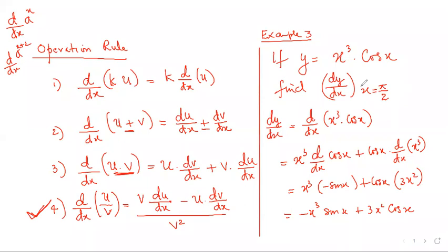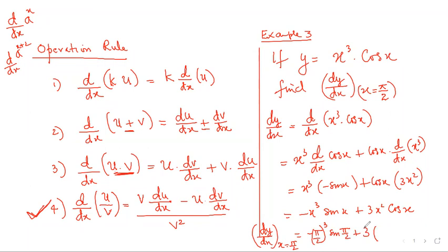After the derivative is done, put x = π/2. Wherever x appears, replace it with π/2. Since cos(π/2) = 0, the second term becomes zero, and the final answer is −(π/2)³. This way I can end up with a number answer, so you can't tell whether the product rule was used or not. Questions likely to cause mistakes I'll put in true or false.